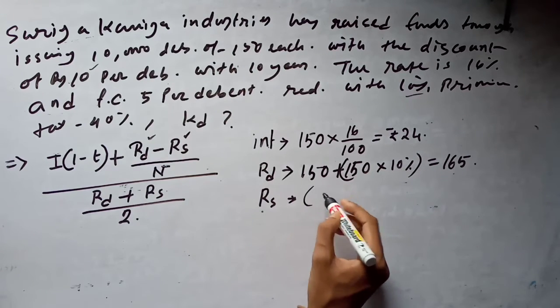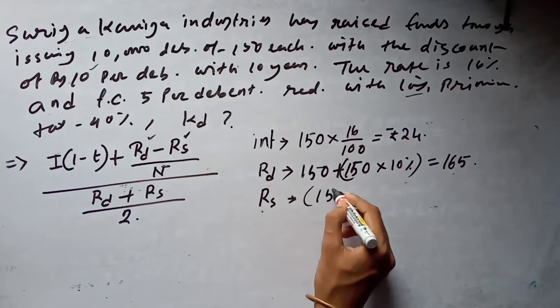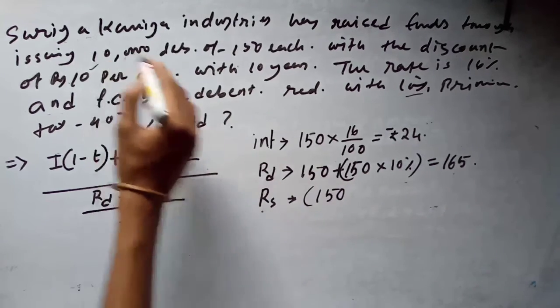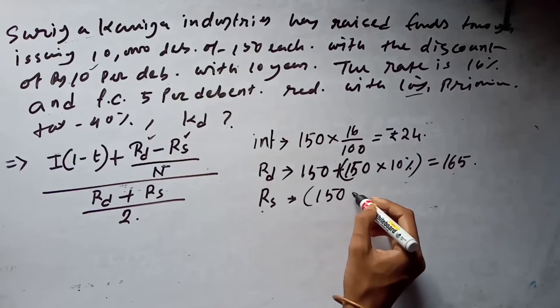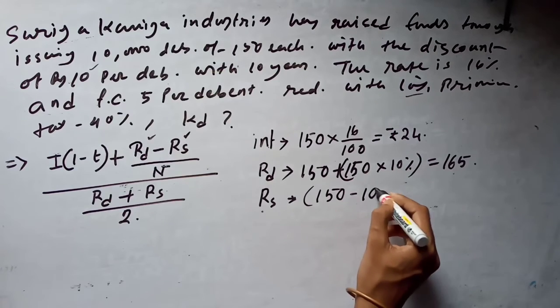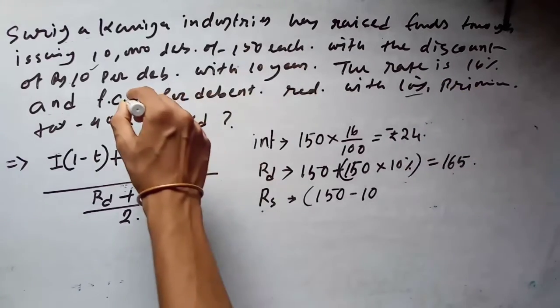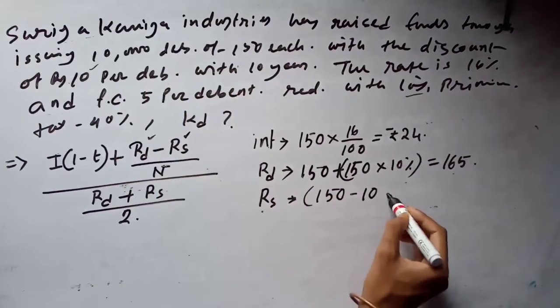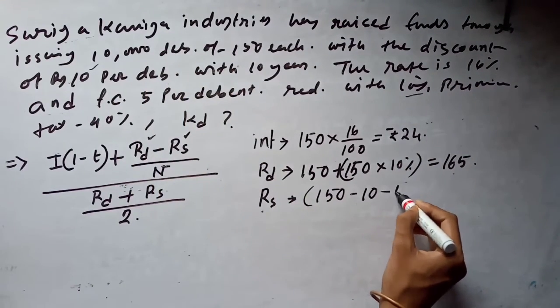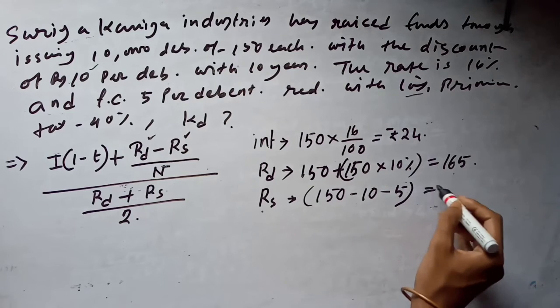And what is the issuing price of the share issued by 10 rupees per debenture discount? The face value of the share is 150, the discount is 10 rupees of each share, and please keep that in mind there is a flotation cost of 5 per debenture share.